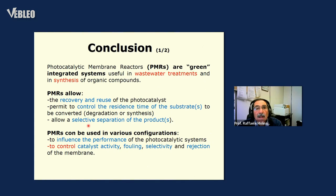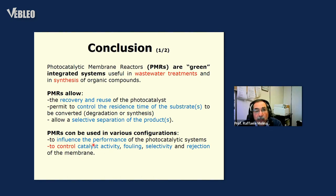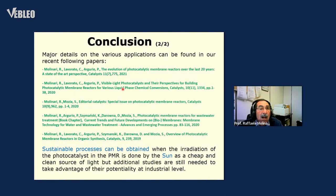In conclusion, photocatalytic membrane reactors are green integrated systems that can be used in wastewater treatment and reactions of synthesis. The recovery and reuse of the photocatalyst is possible. They permit control of the residence time of the substrate inside the photoreactor. Selective separation of the product is possible. The performance can be influenced by various parameters including catalyst activity, fouling, selectivity, and rejection. Here are reported some of our recent publications, mainly reviews on this field, for those interested in further results.